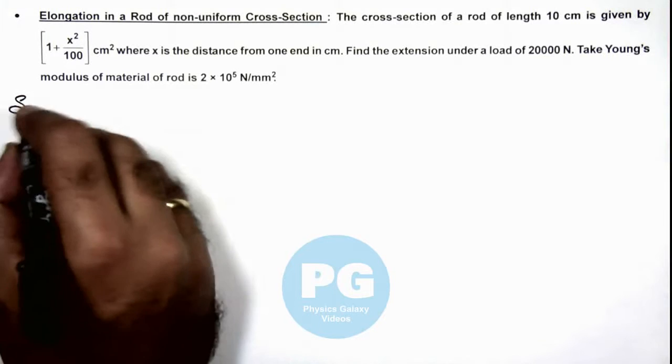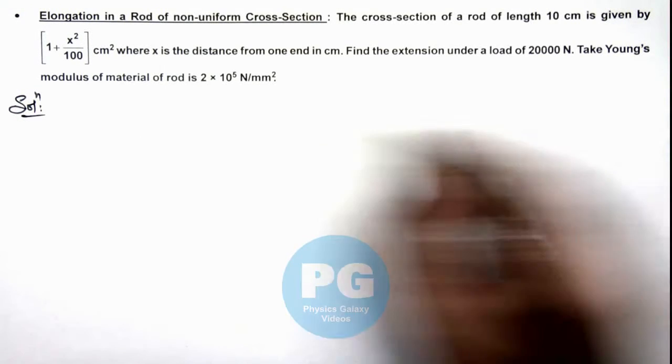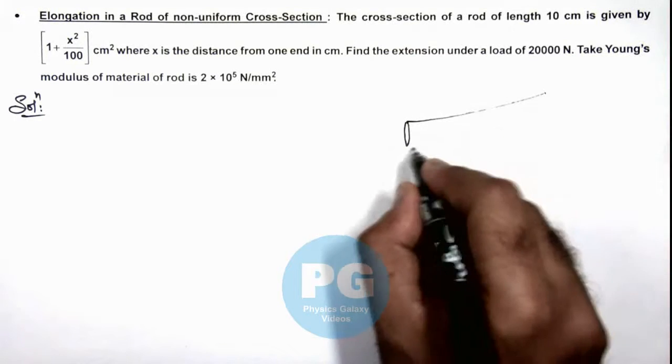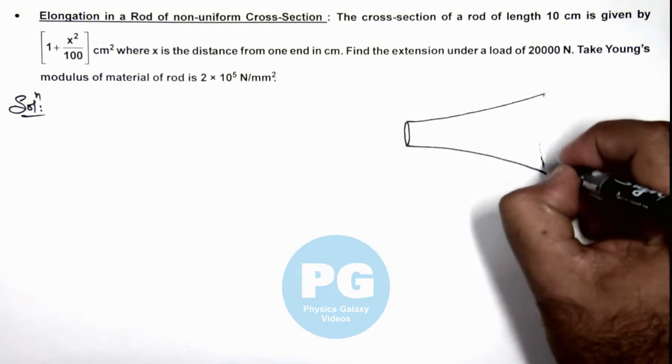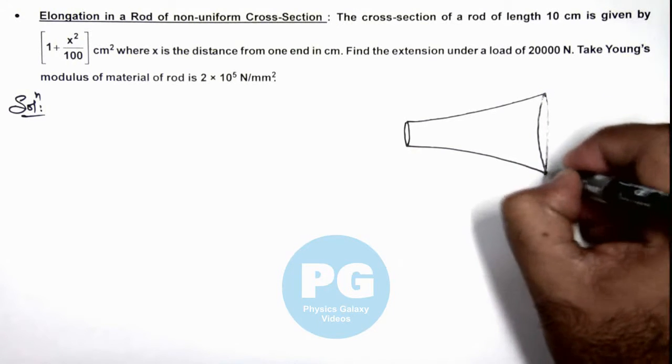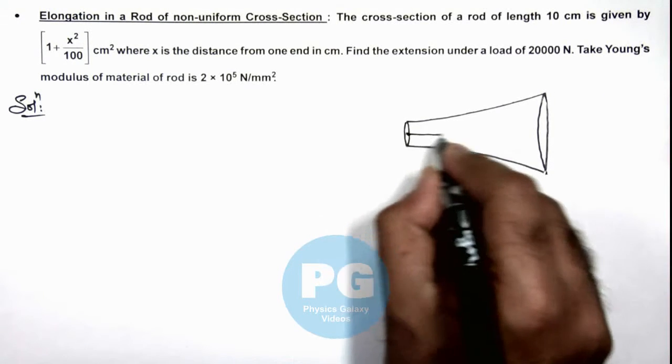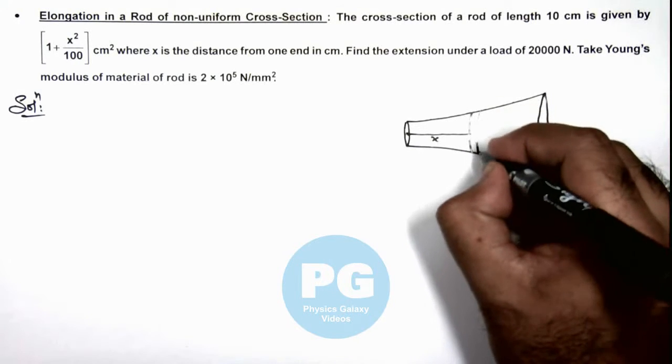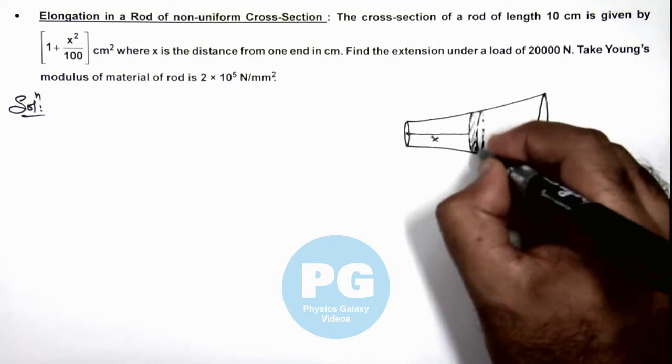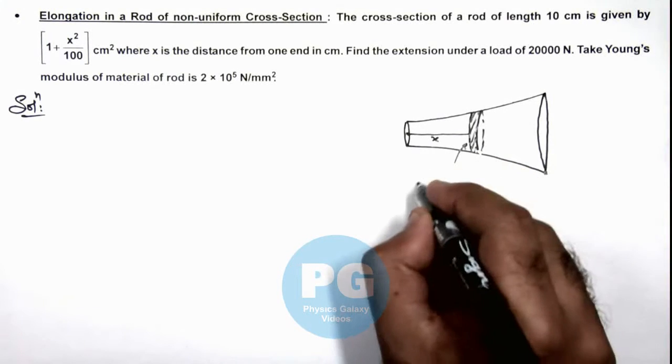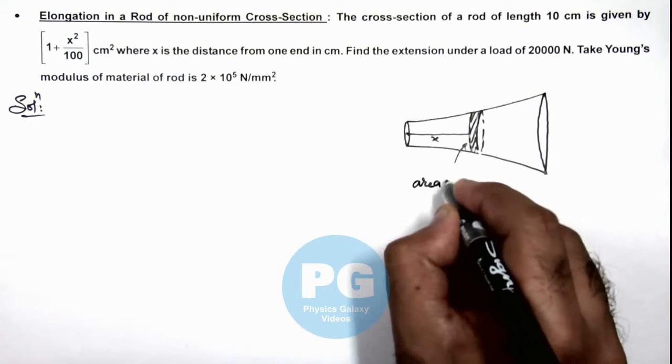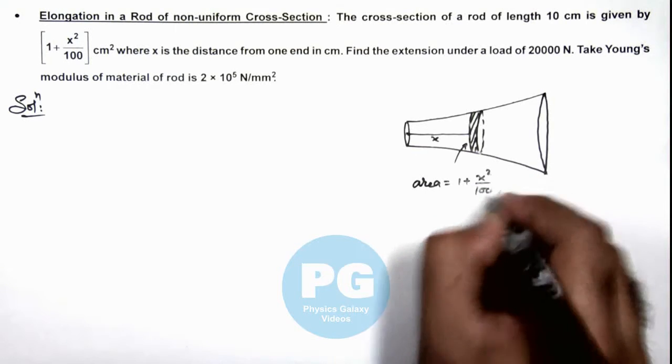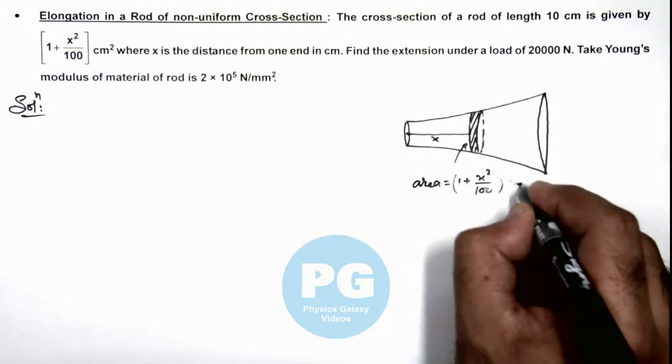Now in this situation the rod is of varying cross section, so if we draw the figure of this rod it'll look like this, of which the cross sectional area is varying. And at a distance x from one end of the rod if we consider an elemental disc over here, the area of this elemental disc can be given as 1 plus x squared by 100, and this is in units of centimeter squared.